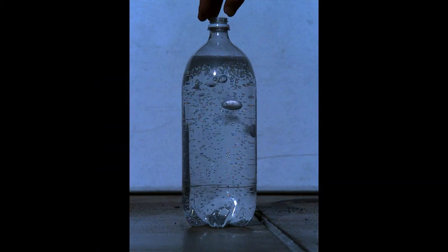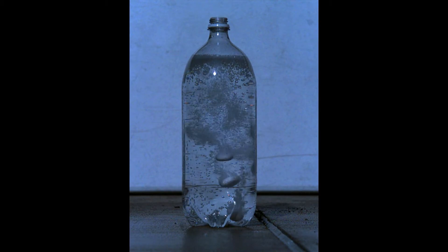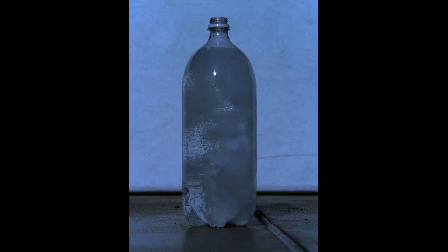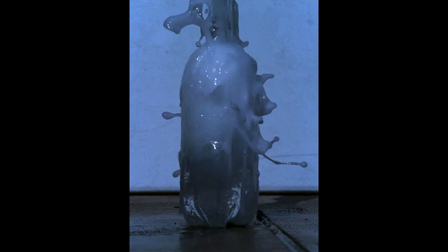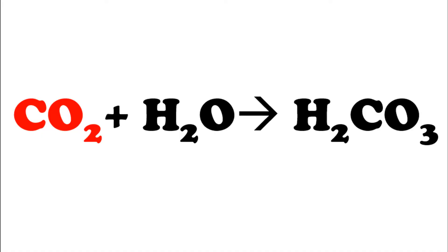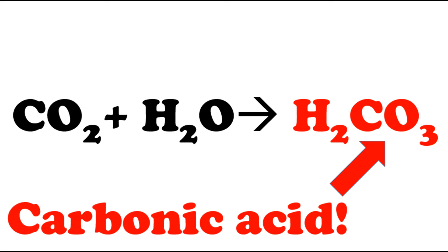However, it's interesting to note that this physical process of carbon dioxide escaping the soda drives a chemical process. The escape of carbon dioxide from water-based solutions causes the water to become less acidic through a chemical reaction. To see how this works, let's first consider what happens when CO2 dissolves in water. Some of the carbon dioxide that dissolves in water actually reacts with the water to form an acid called carbonic acid. This process can be represented by the chemical equation you see here.